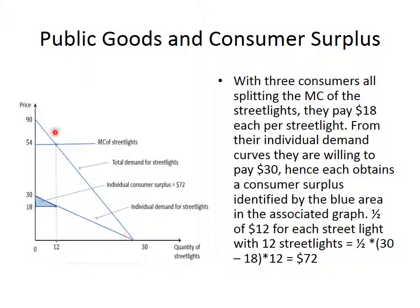Each of us gets consumer surplus. Consumer surplus is the difference between the amount I'm willing to pay — $30 — and the amount I actually pay — $18. So I get $12 in consumer surplus per unit. It's actually this triangular space, so it's one half of 12 times 12 units, giving us $72 in consumer surplus.